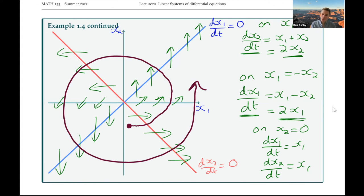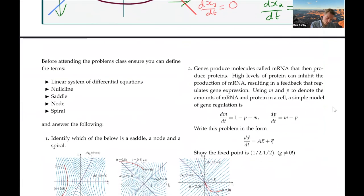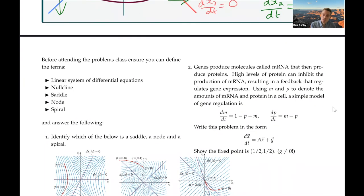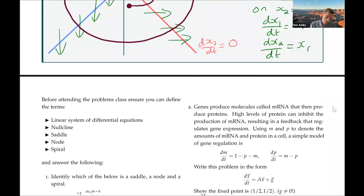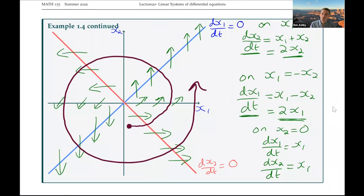If those arrows had been pointing inwards, then we would have been spiraling in. That's it for today. There are a few self-study questions at the end. Make sure you're familiar with phase planes, what we mean by nullclines, and how we can draw on direction fields.